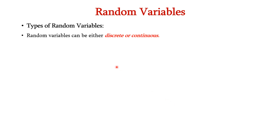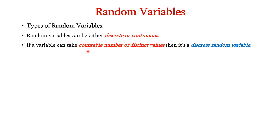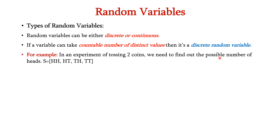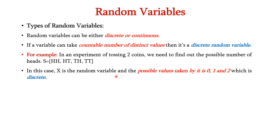Types of random variables: random variables can be either discrete or continuous. If a variable can take a countable number of distinct values, then it is called a discrete random variable. For example, in an experiment of tossing 2 coins, the possible outcomes will be head-head, head-tail, tail-head and tail-tail. So the possible number of heads can take any of these 3 values: 0 in case of tail-tail, 1 in case of head-tail or tail-head, and 2 in case of head-head. Thus the random variable X can take 0, 1 or 2, which is discrete.